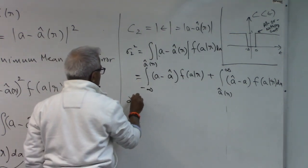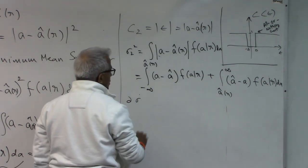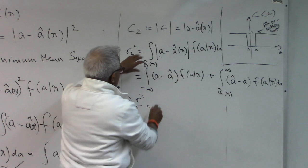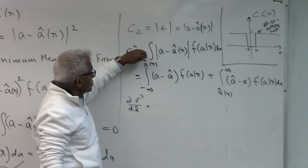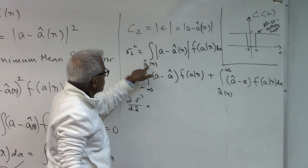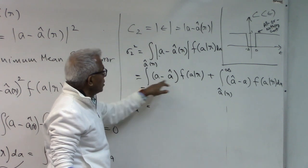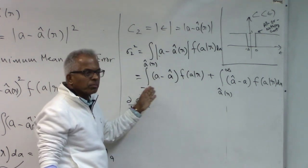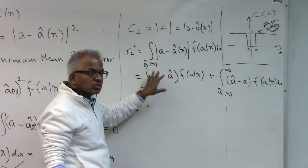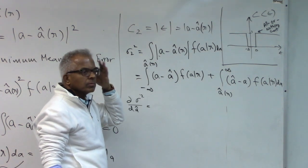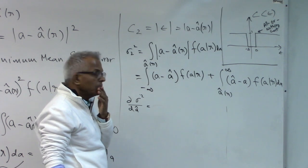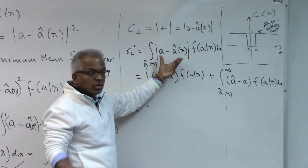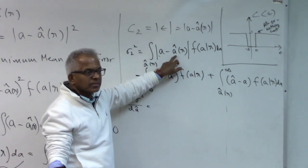To minimize, we take the derivative with respect to A-hat and set it to zero. Using the Leibniz rule: the derivative of the upper limit (which is 1) substituted gives f(A-hat|R) for the first term. The derivative of the lower limit of the second integral is −1, giving −f(A-hat|R). We also get the derivative of the integrands with respect to A-hat: for the first integral it is −f(A|R), and for the second it is +f(A|R) integrated over the respective regions.